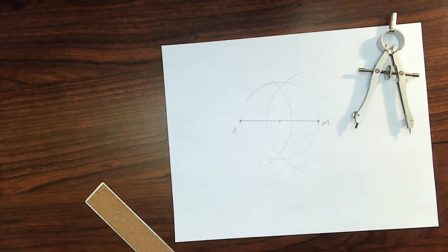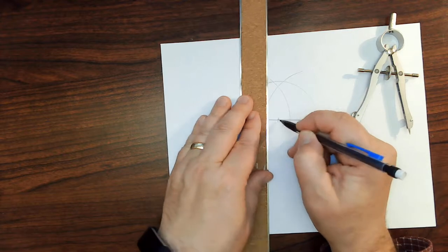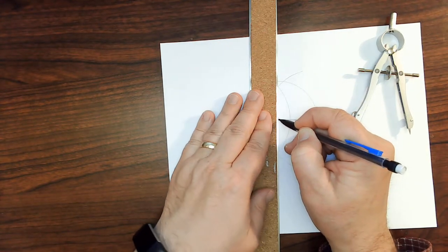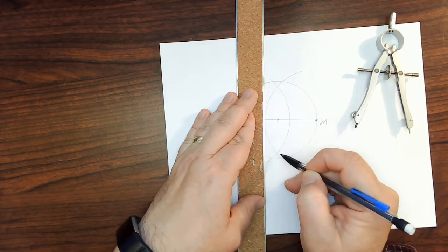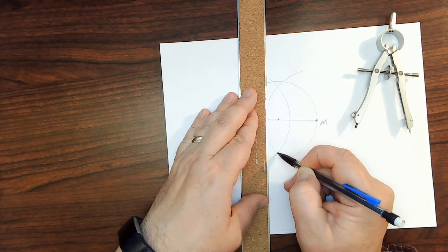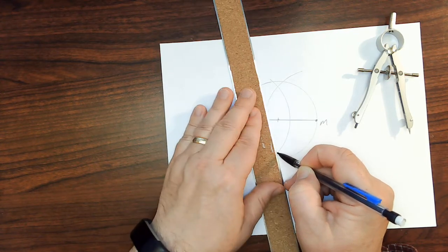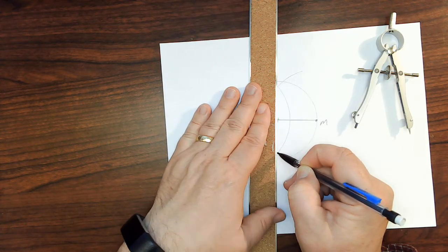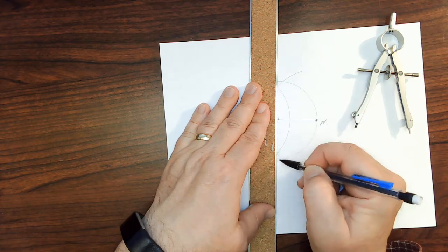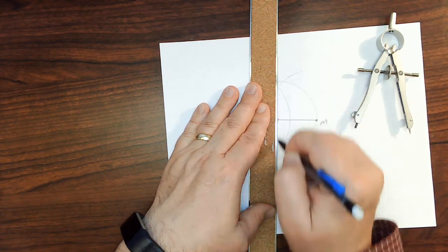And then I'm going to use my straight edge again. If I did it right, if I line it up with this intersection of the arcs and that intersection of the arcs, it should go right through my center point.